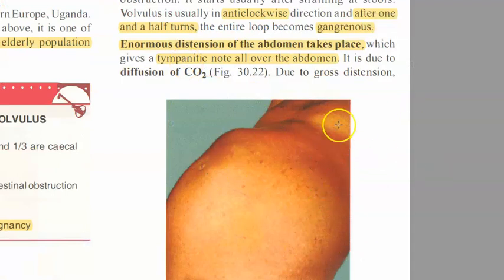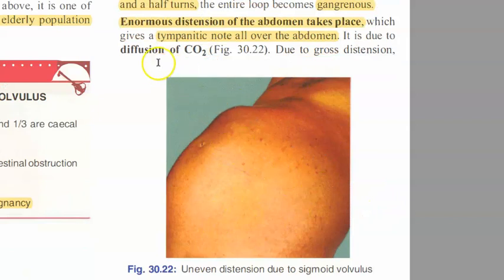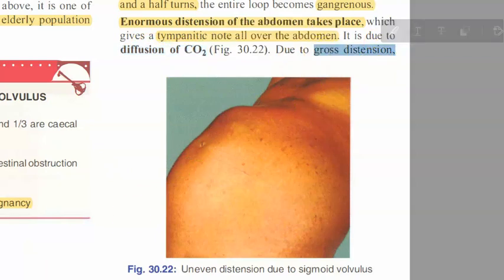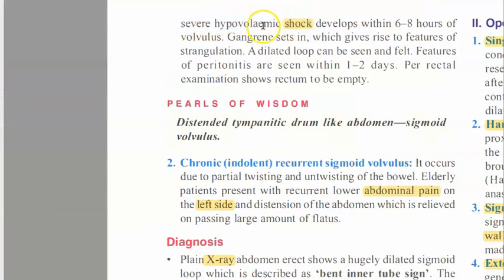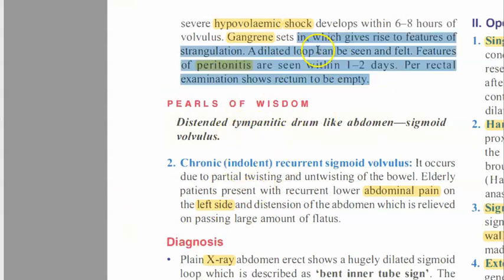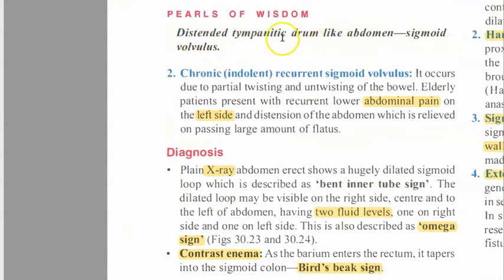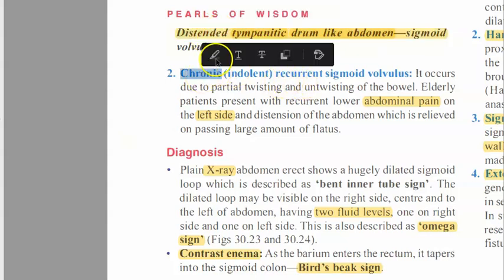After one and a half turns, it becomes strangulated and gangrenous. There will be enormous distension of the abdomen with a tympanic note all over - this is due to diffusion of CO2. Because of this gross distension, the patient can go into severe hypovolemic shock. Gangrene sets in, leading to peritonitis. The dilated loop can be seen and felt. Key pearl: distended tympanic drum-like abdomen is characteristic of sigmoid volvulus.